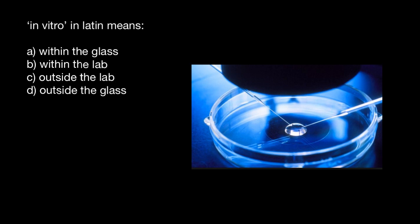In vivo means in a live organism. For example, we can study how a whole organ like the liver works by taking some medicine and taking blood for different tests. But we can also take just a few cells of the liver and conduct experiments on how these cells react to certain chemicals — and again, we call this 'in vitro'.